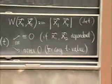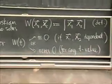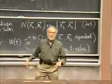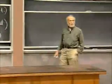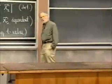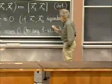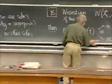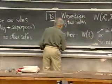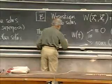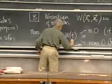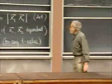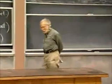This second case — Wronskian never zero — happens if x1 and x2 are linearly independent. That is pretty much the end of the theory. Now let's start in on the matrices.